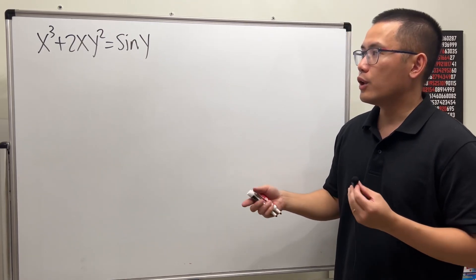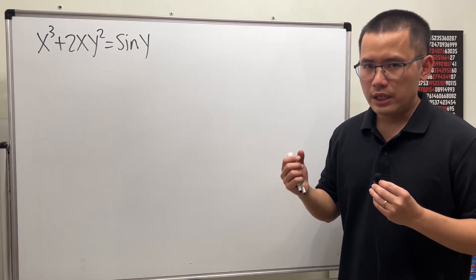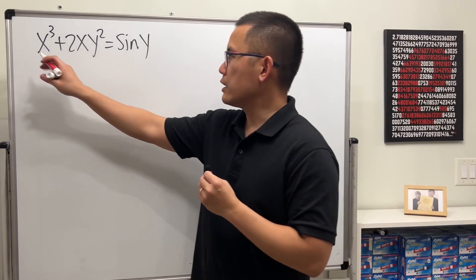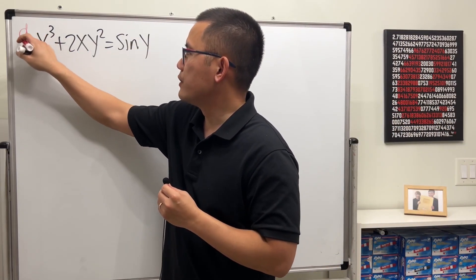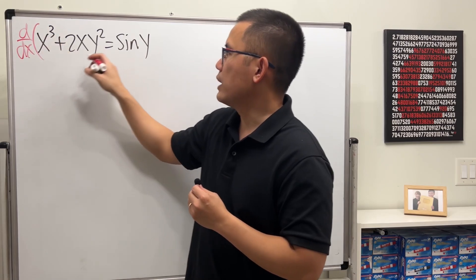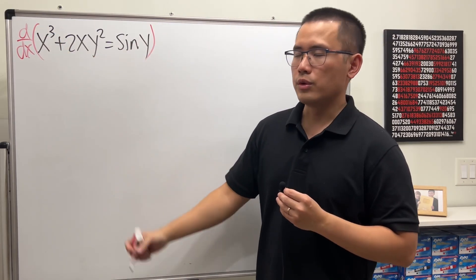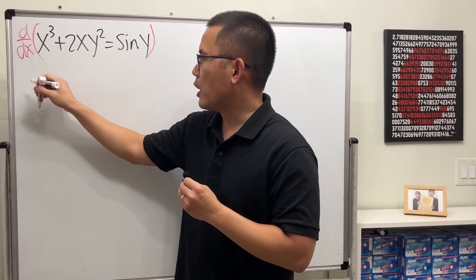Let's do the Calc 1 way first, which is just the typical implicit differentiation. And to do so, I can just look at this equation and then differentiate this with respect to x, and then just go to the work. So the derivative of x to the third power, we get 3x squared.